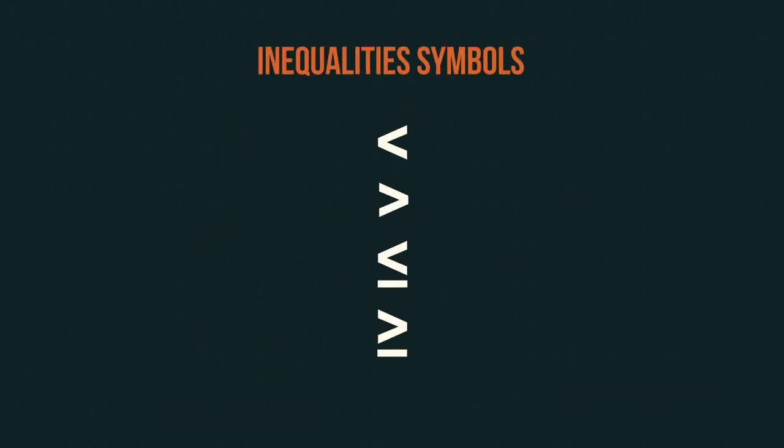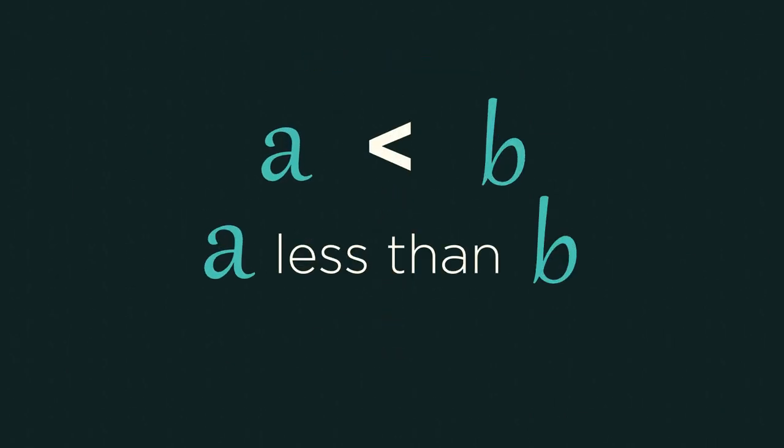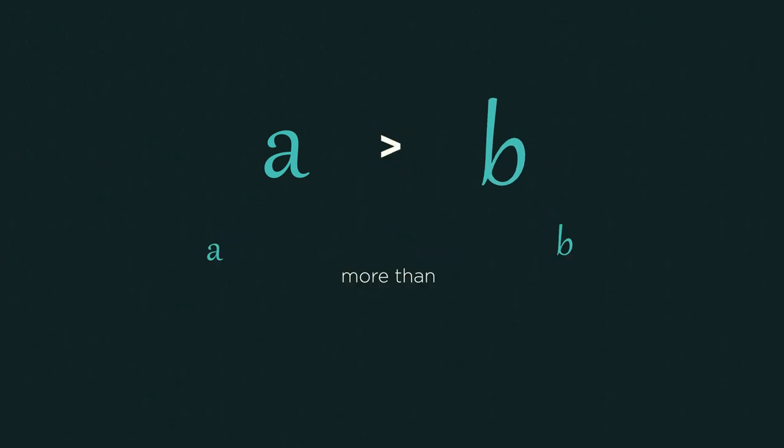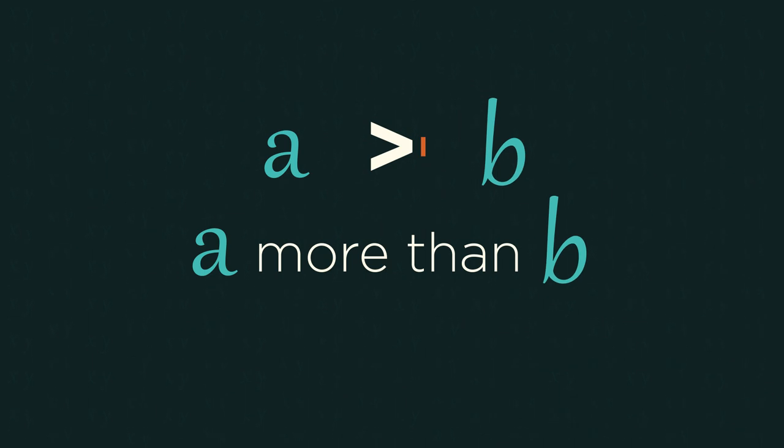These are the symbols for inequalities. A is less than B. The small side is next to A and the big open mouth is next to B, so A is smaller than B. A is bigger than B. A has the big side this time.